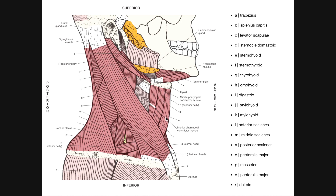Now for some anterior neck muscles in the deeper layers. Here's your hyoid bone, so all the muscles beneath this are going to be your infrahyoid muscles. Muscle E is sternohyoid because if we follow it downwards, we assume it originates on the sternum, and then it moves upward to insert on the hyoid bone — so sternohyoid.